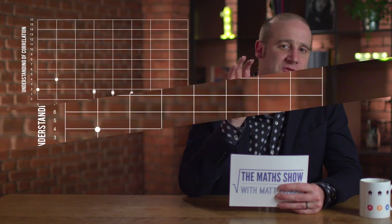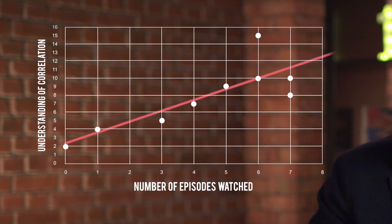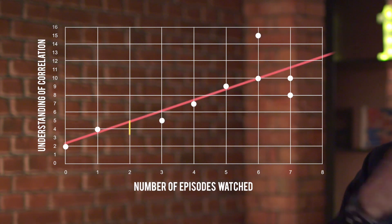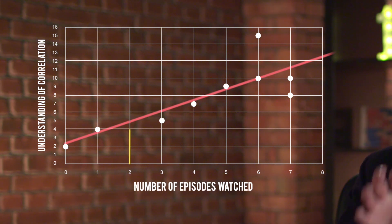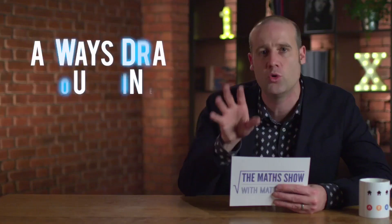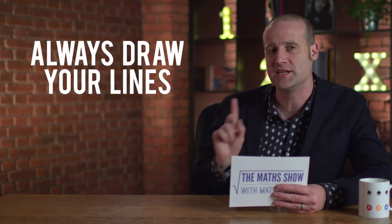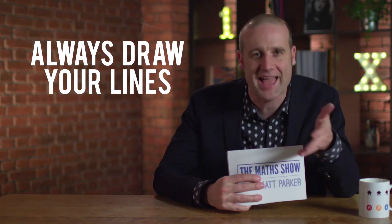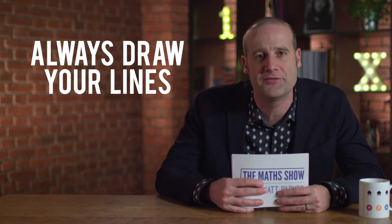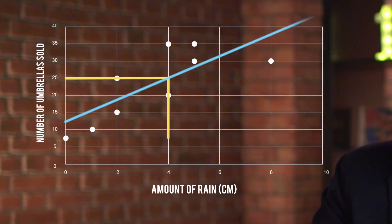You'll often be asked to read values off your line of best fit, either going from the x-axis to estimate something on the y, or from y back to x. In these cases, always draw your lines. A lot of people make a mistake when they try to read the scale and get the wrong number off the axis. But if you draw your lines, the examiner can see what you were trying to do, and you'll get some marks for the working out.